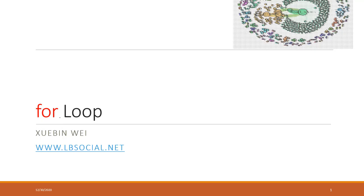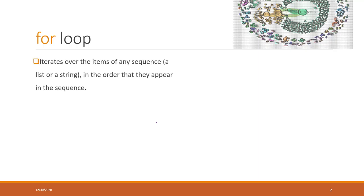Welcome to today's lecture. Today we will talk about the for loop, which is one type of flow control. A for loop can iterate all items of any sequence in the specific order that they appear in a sequence. The sequence can be a list or can be a string. Remember that a string is a sequence of characters. Once we get each single item from any sequence, we can perform some actions on those items.